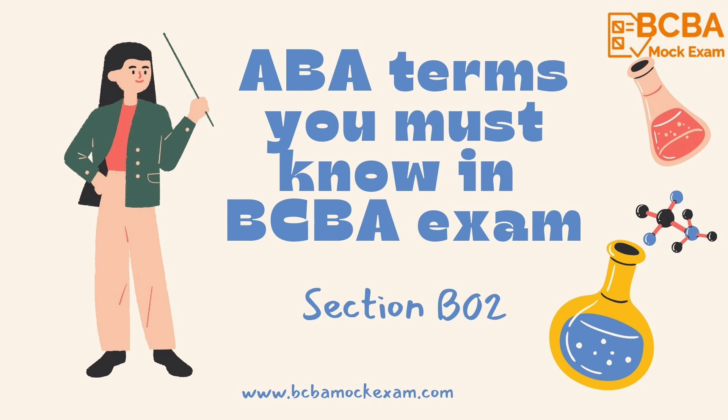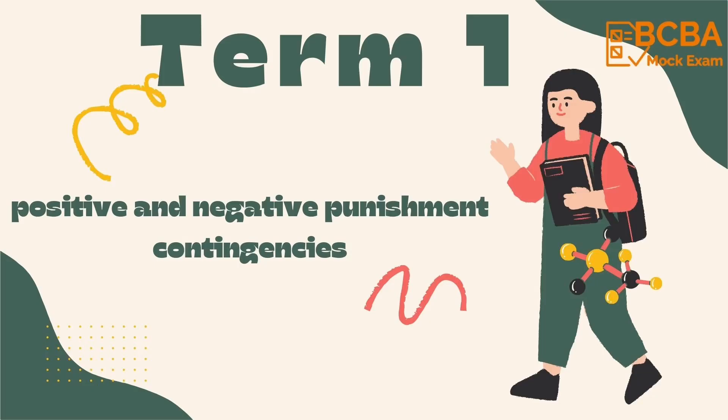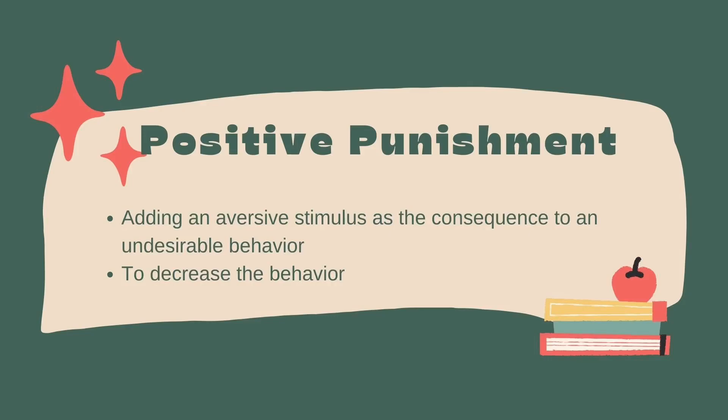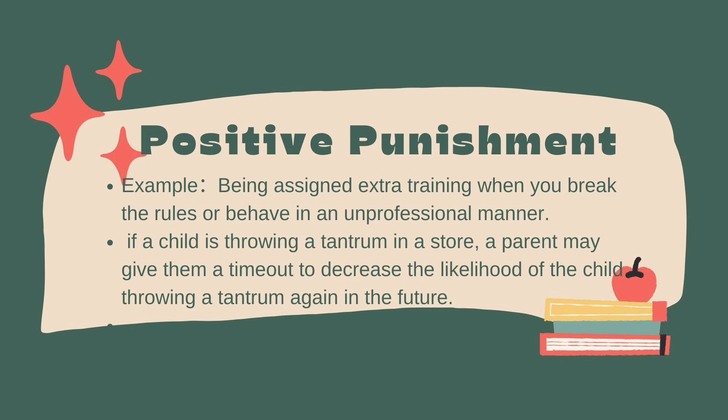Our first term is about positive punishment and negative punishment. Positive punishment is when an aversive stimulus, such as a scolding or a timeout, is added to decrease the likelihood of an undesired behavior. For example, if a child is throwing a tantrum in a store, a parent may give them a timeout to decrease the likelihood of the child throwing a tantrum again in the future.